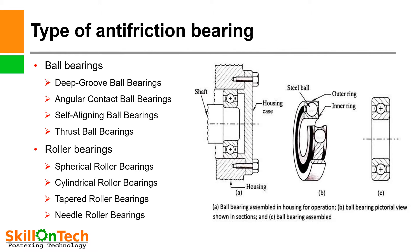There are two types of anti-friction bearings: ball bearings and roller bearings. A picture of a ball bearing is shown with its different components. You can see the balls, the outer race, the inner race, the housing case, the shaft, and the cage — which keeps the balls intact between the inner and outer race. This is the assembled view of the ball bearing.